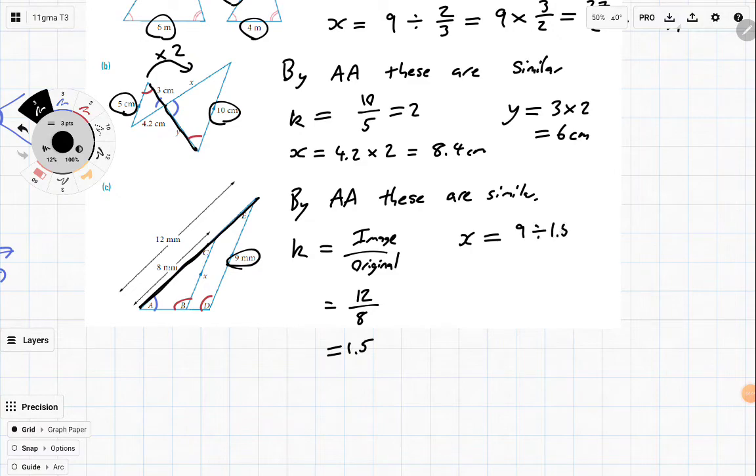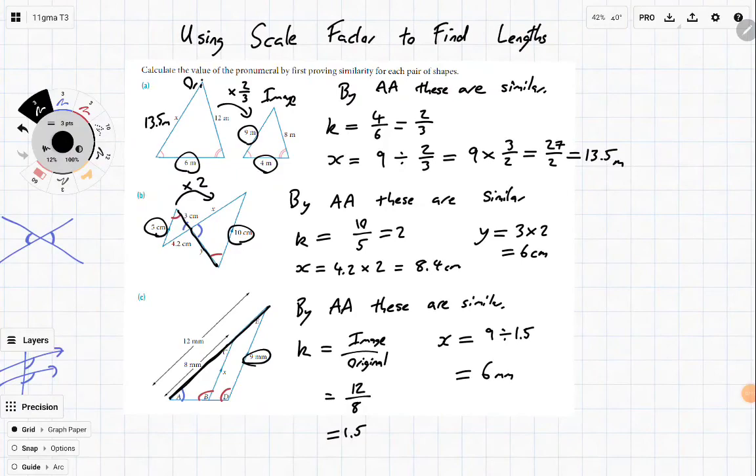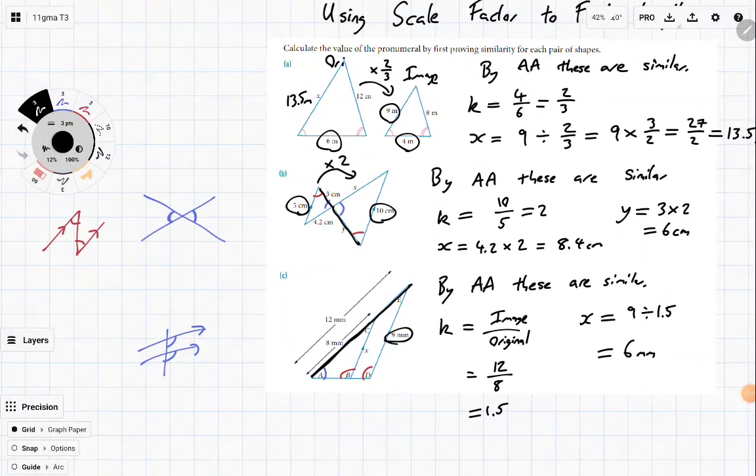So that means that x is going to be equal to 9 which is the matching side of x divided by 1.5 which is equal to 6 millimeters and there we are so these were a few little challenges working with them and a little bit of a recap on some of our old rules in terms of parallel lines and intersecting lines all righty i'll see you in the next one goodbye.